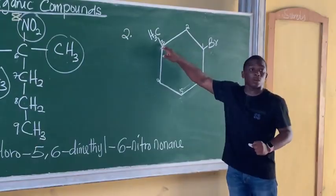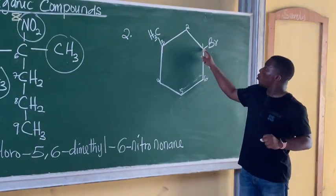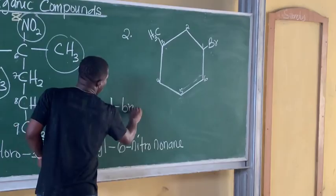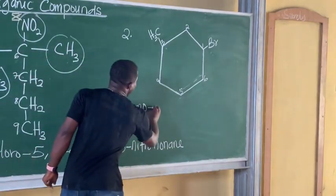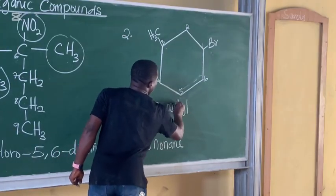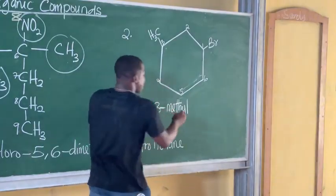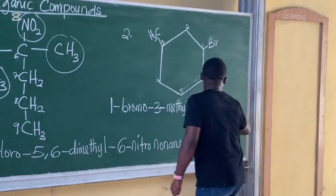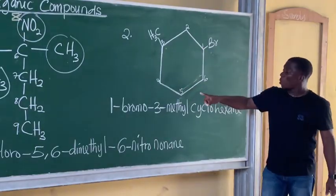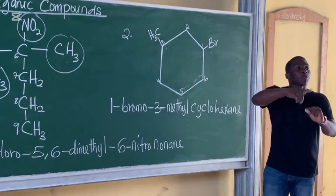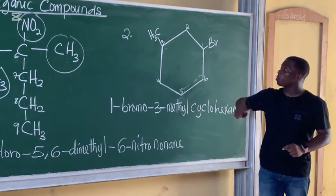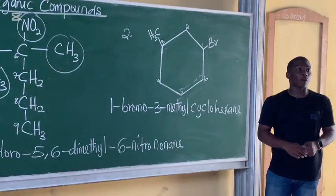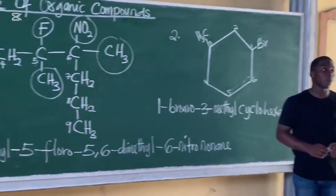So this is 1-bromo, 3-methyl. This is a cyclic compound, so it will start with 'cyclo,' and this is 6-sided, so hexane. Why are we ending with '-ane'? Because it is made up of single bonds all through. But if you have a double bond anywhere, your counting must start from the carbon having the double bond. Since there is no double bond, you start counting from the smallest alphabet. The name is 1-bromo-3-methylcyclohexane. I will see you in the next tutorial video — subscribe and stay updated. Thank you for watching.